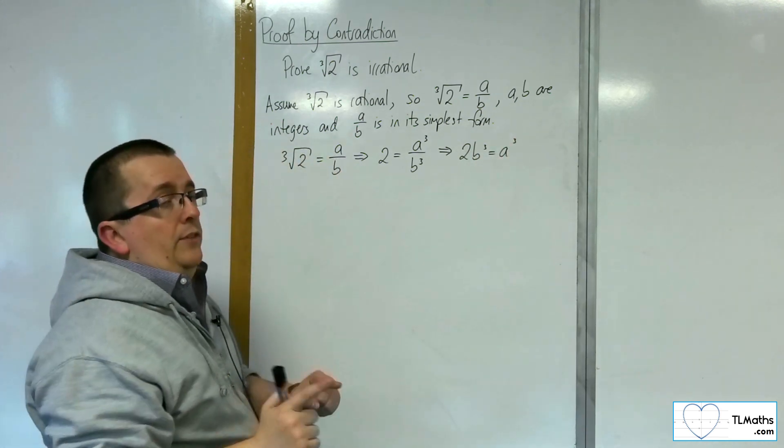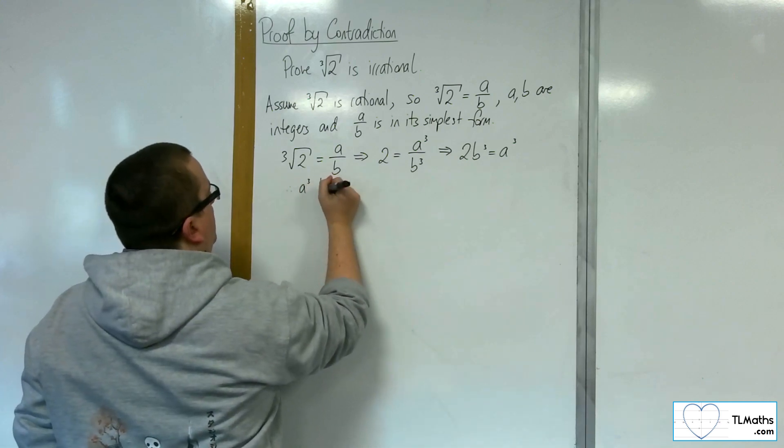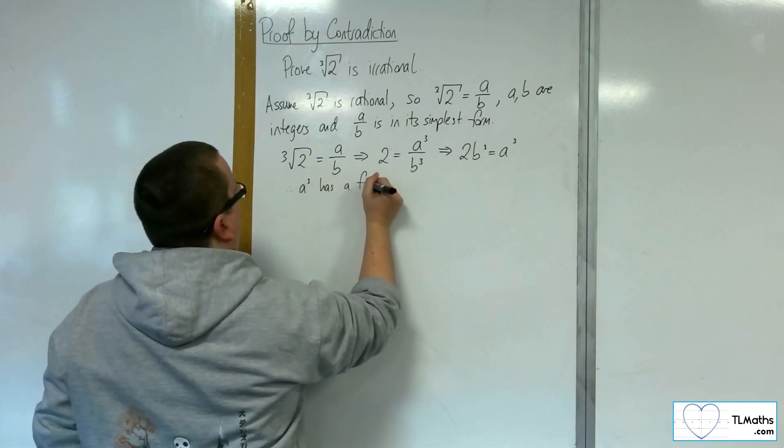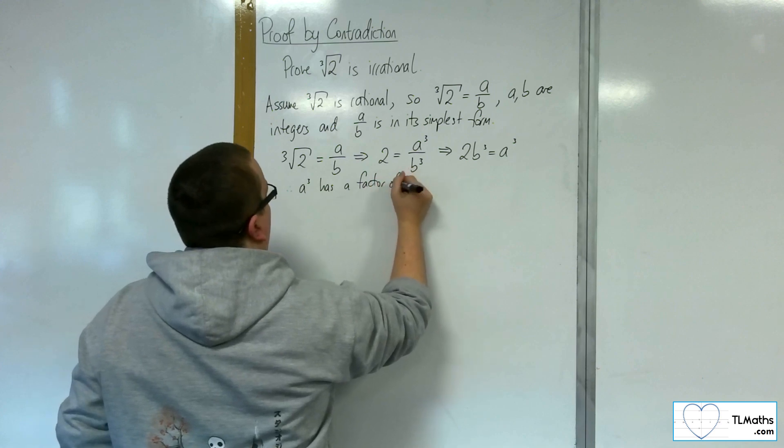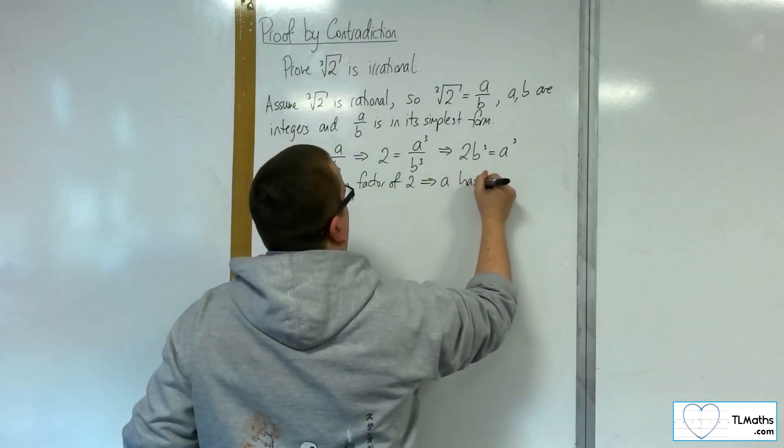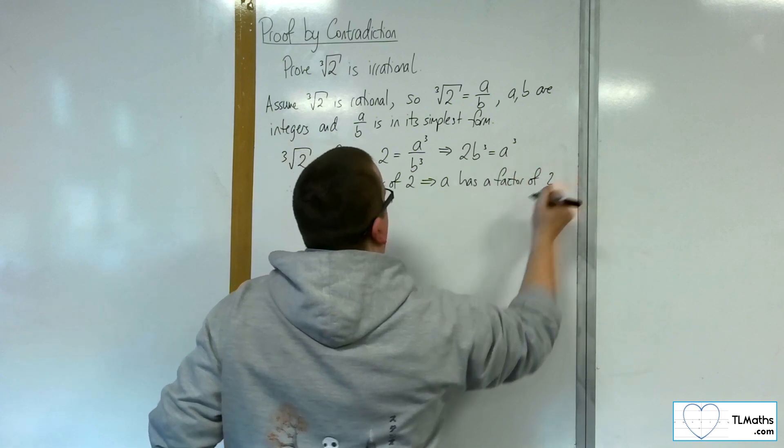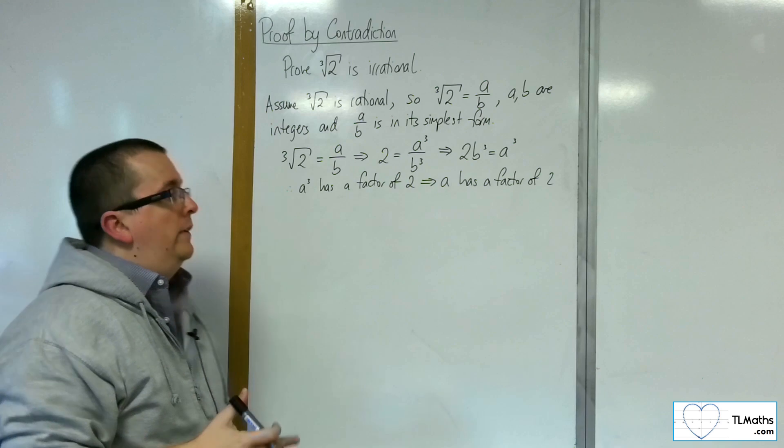So that means that a cubed has a factor of 2. So therefore, a cubed has a factor of 2, and that implies that a has a factor of 2. OK, that's through the prime factorization of this.